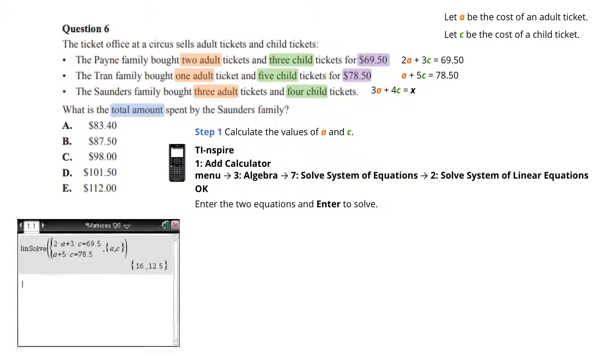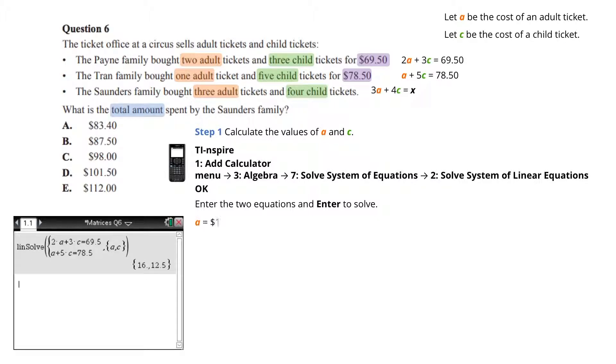Enter the two equations and then enter again to solve. So, the cost of an adult ticket is $16 and the cost of a child ticket is $12.50.